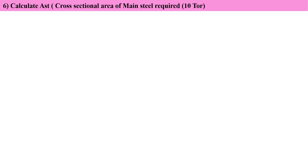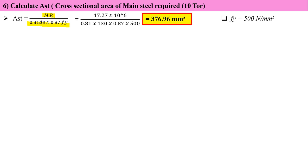Now calculate the area of steel by considering the main steel bar as 10 mm. Formula is MR divided by 0.81 DE times 0.87 fy. Taking fy as grade of steel, 500 N per mm square, I'm getting 376.96 mm square.